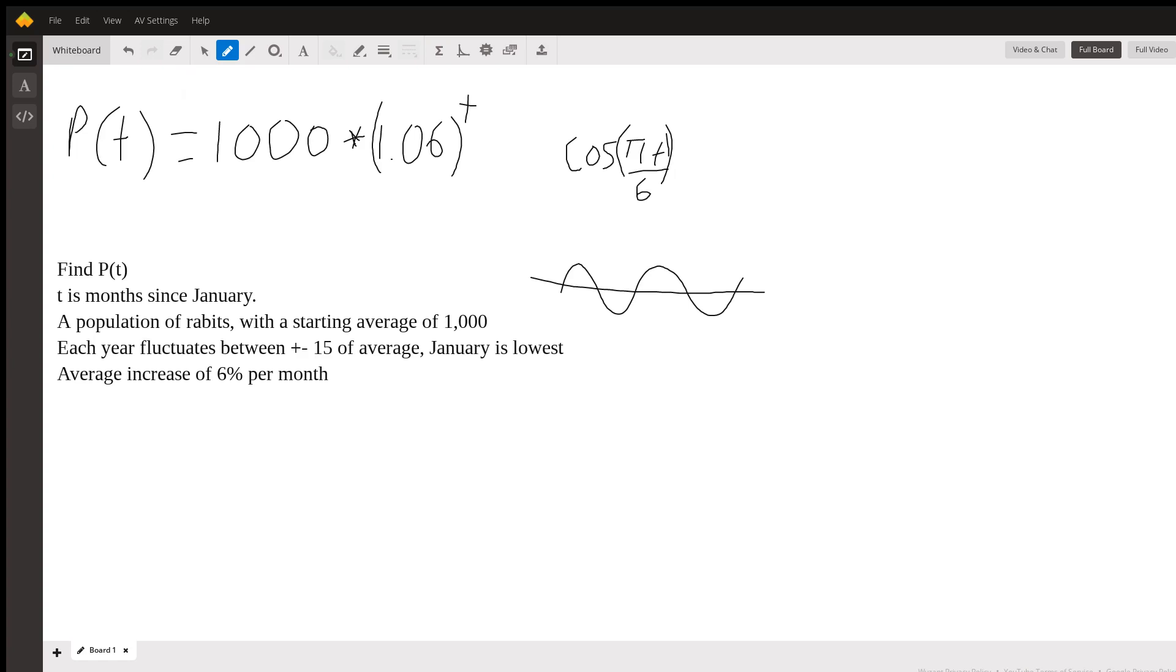this cosine term accounts for our fluctuation. But we have one last bit of information, which is that in the month of January, which is month 0, this fluctuation is going to be at its lowest. Cosine of 0, which when we substitute T in for this equation, it's going to be a cosine of 0, is going to be 1. And so, since we want 1 to be at its lowest and cosine fluctuates between 1 and negative 1, we actually want to subtract this cosine term.